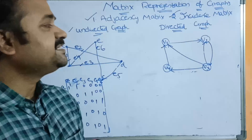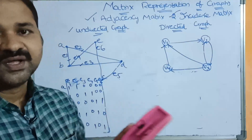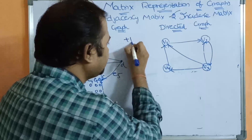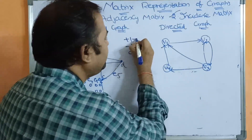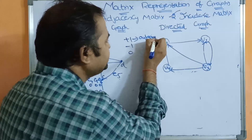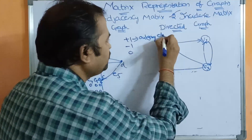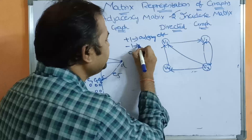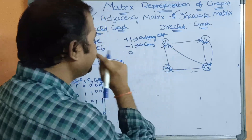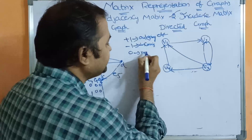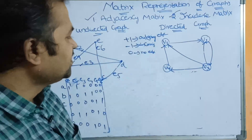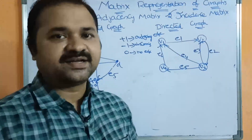In this way we can construct incidence matrix for undirected graph. Now let us see how to construct incidence matrix for directed graph. Here the matrix is filled with three values: plus one, minus one, and zero. Plus one means the edge is outgoing; minus one means the edge is incoming; zero means no edge.